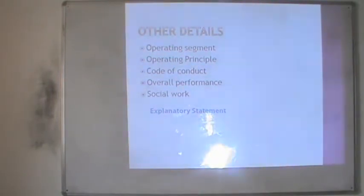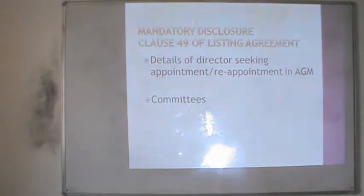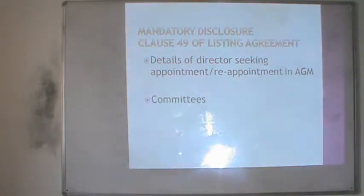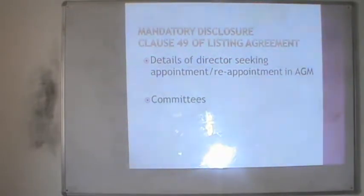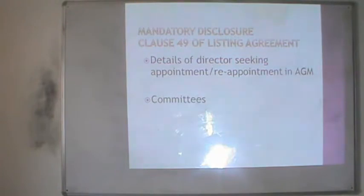Finally an explanatory statement is given by the company's management regarding the explanation of the company's work done in the last year. The other part to be presented by the company is the mandatory disclosure. As per clause number 49 of the listing agreement, each company has to show two things to the stock exchange as a mandatory requirement, and in the absence of this the company can be delisted from the stock market. These relate to directors' appointment and reappointment in the annual general meeting, as the time period for which directors are appointed is fixed.